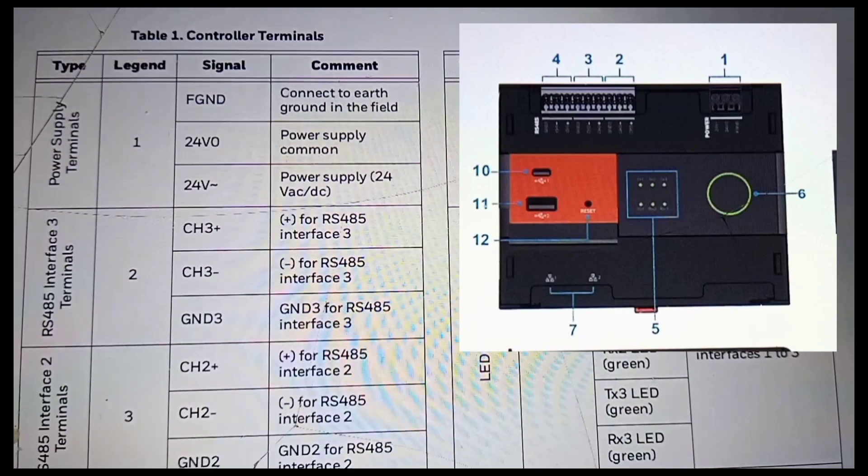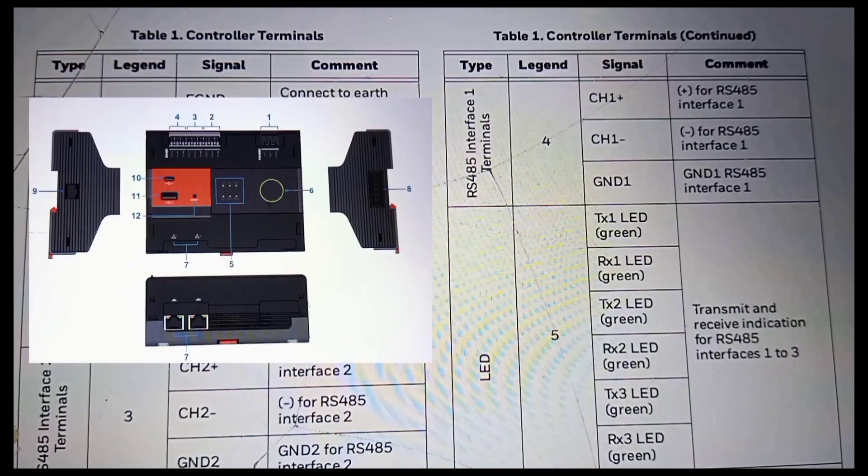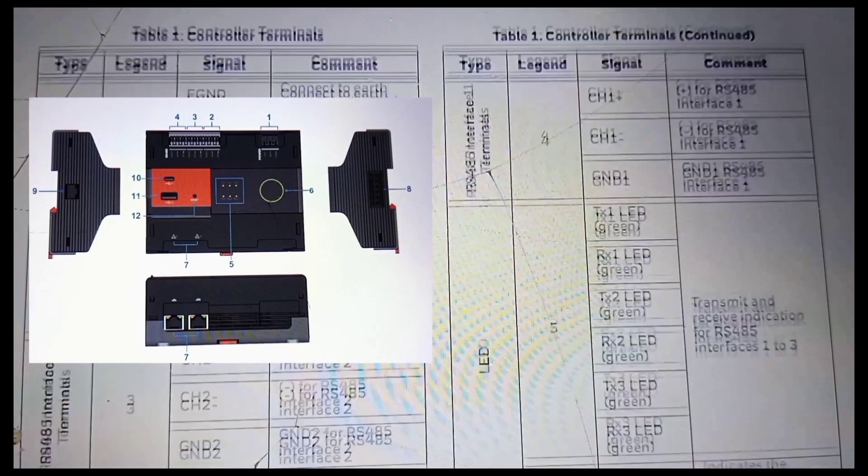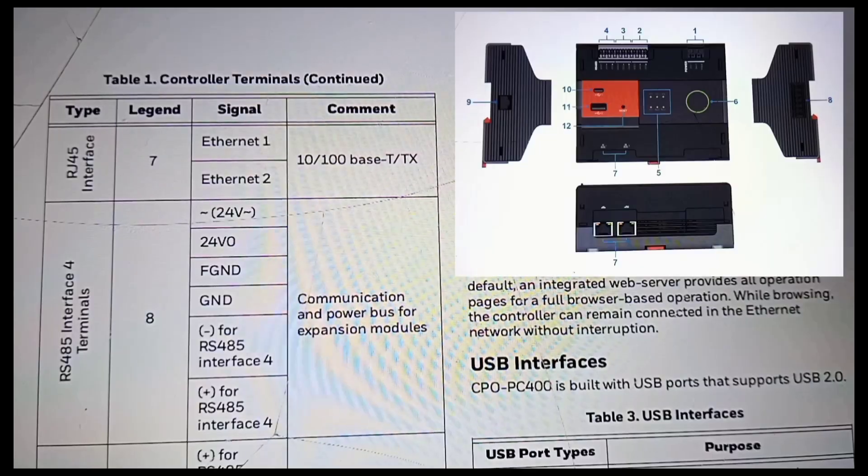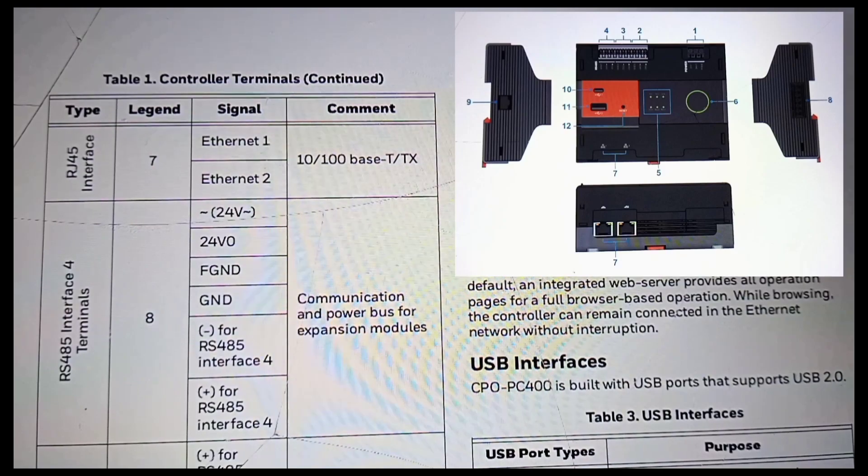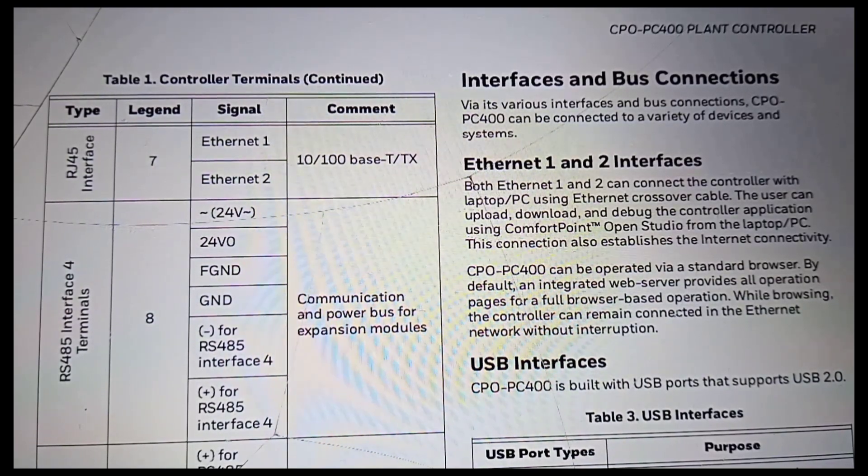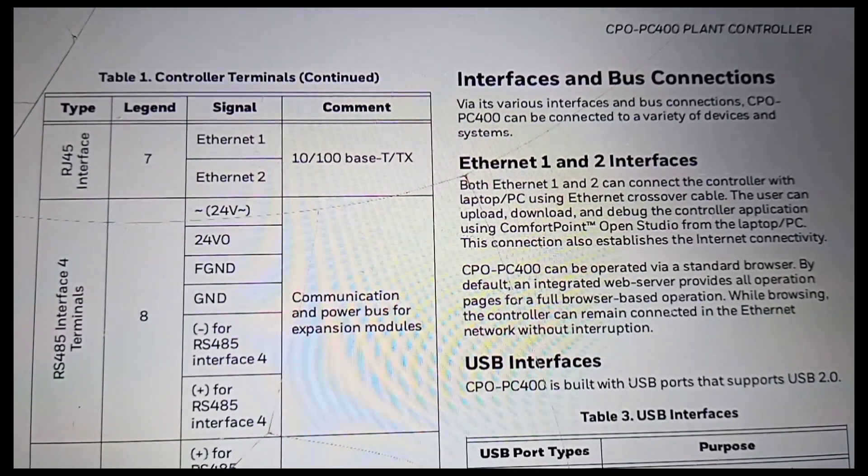The CPO plant controllers are designed for a wide variety of complex applications. The CPO PC500 device features three RS-485 channels, two Ethernet ports for BACnet IP devices, an RJ11 interface for HMI device, and Touch Flakes to connect and expand with multiple IOs without manual wiring.